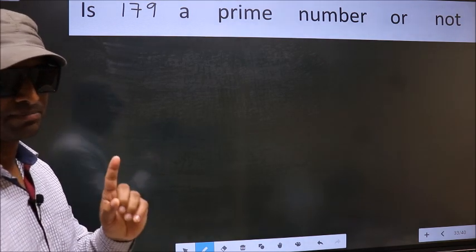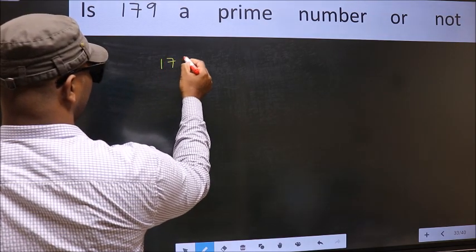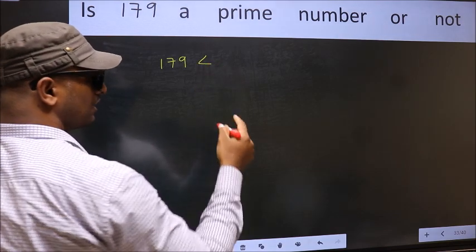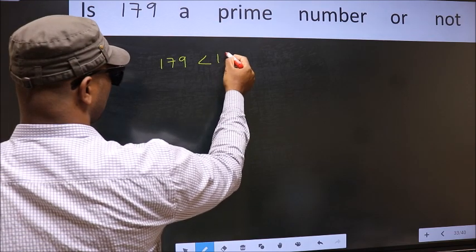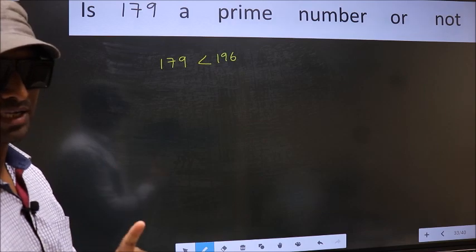For that, step 1: Given number 179, this is less than and close to which perfect square number? That is 196. This is your step 1.